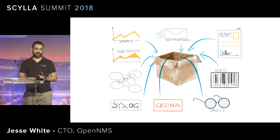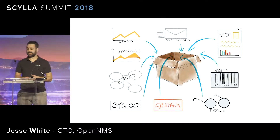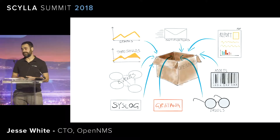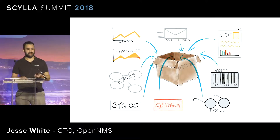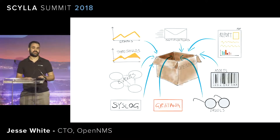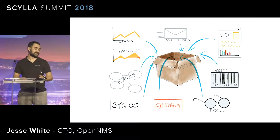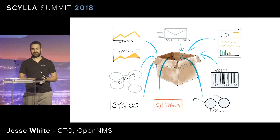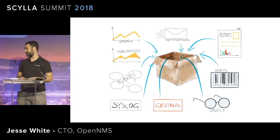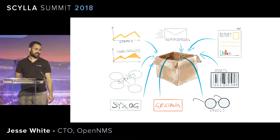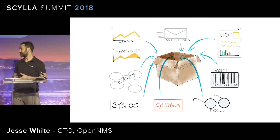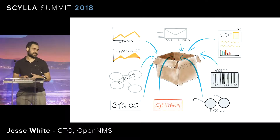We support gathering metrics from different sources. We support poll-based approaches where we periodically go and poll for metrics — for example, via JMX, JDBC, and SNMP. We also support streaming telemetry, where devices will actually push the metrics to the platform. But today we'll focus particularly on the graphing aspect and the time series data.